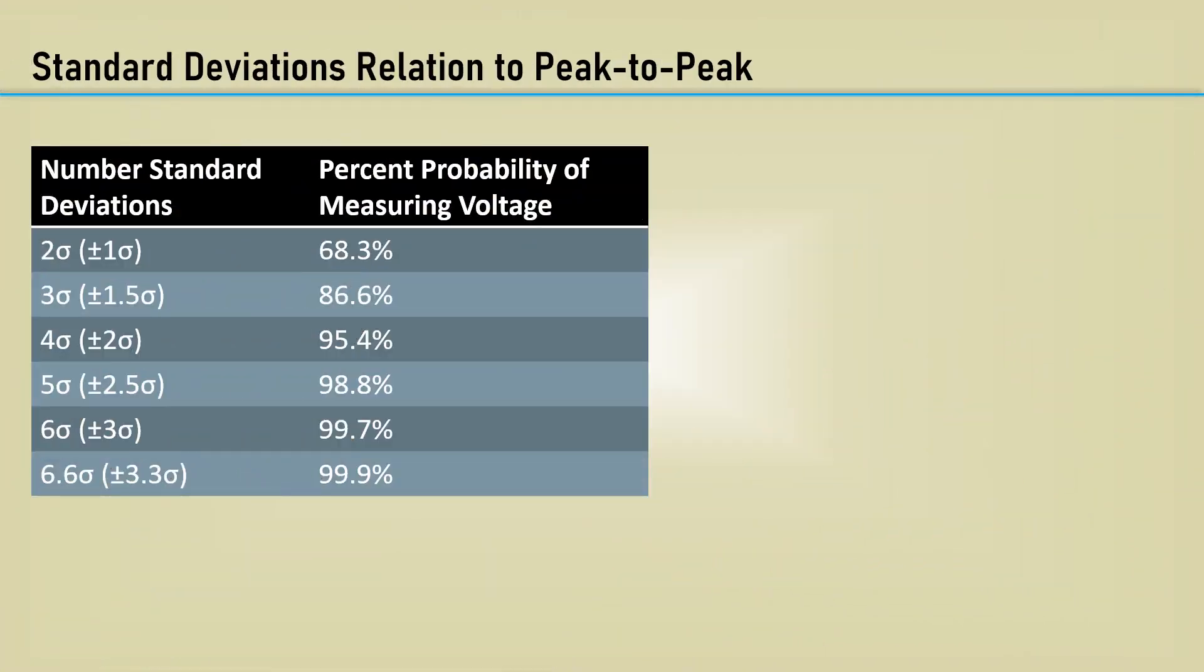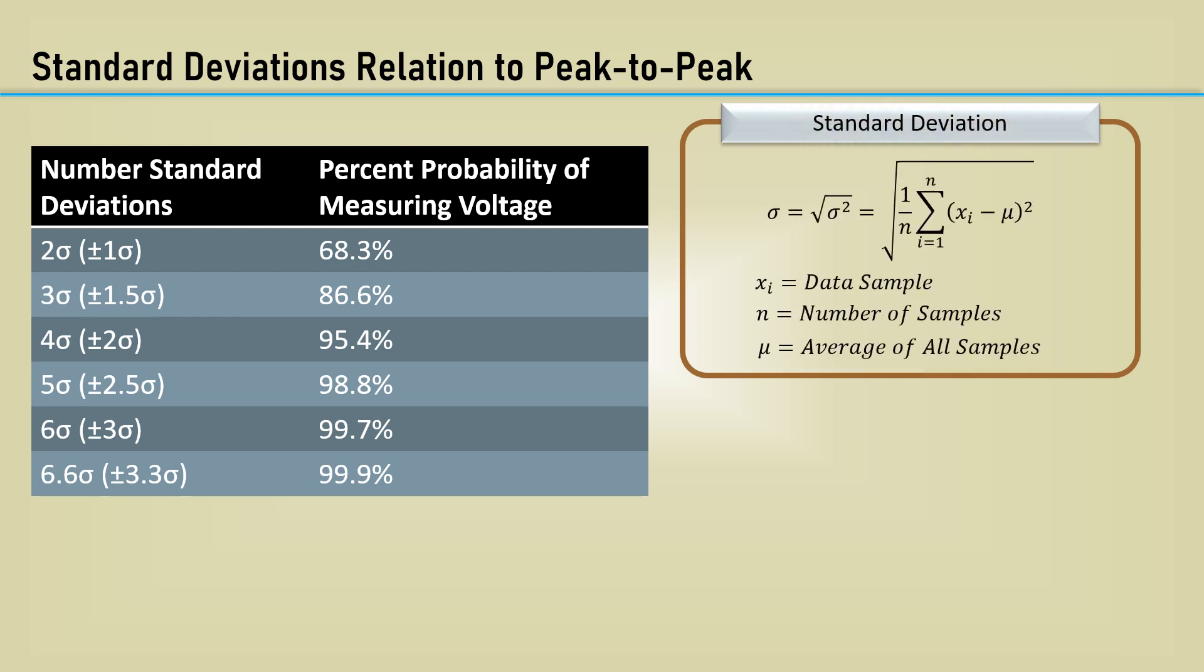This is a table of the percent probabilities of measuring voltage for the various number of standard deviations. Here is the equation for the standard deviation where xi is the data sample, n is the number of samples, and mu is the average of all the samples.